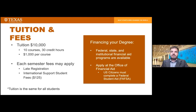Let's talk about tuition and fees. The full program cost is $10,000 for 10 courses totaling 30 credit hours. Tuition is the same for U.S. and international students, though some fees may apply for late registration, and international students pay an additional international student support fee of $125. U.S. citizens may finance their degree through federal, state, and institutional financial aid by completing a FAFSA — the Free Application for Federal Student Aid — through UT's Office of Financial Aid.